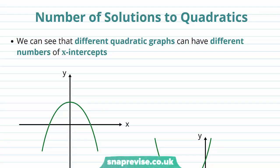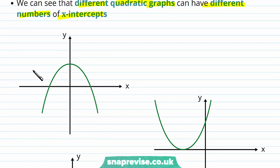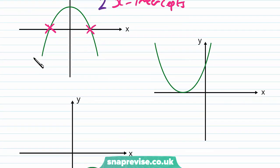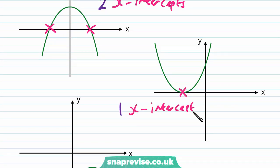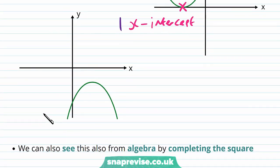So what are the different number of solutions that quadratics can have? We can see that different quadratic graphs can have different numbers of x-intercepts. If we look at this particular graph, we have two x-intercepts. If we look at this graph, we have exactly one x-intercept. And if we look at this graph, there are no x-intercepts, or zero x-intercepts.